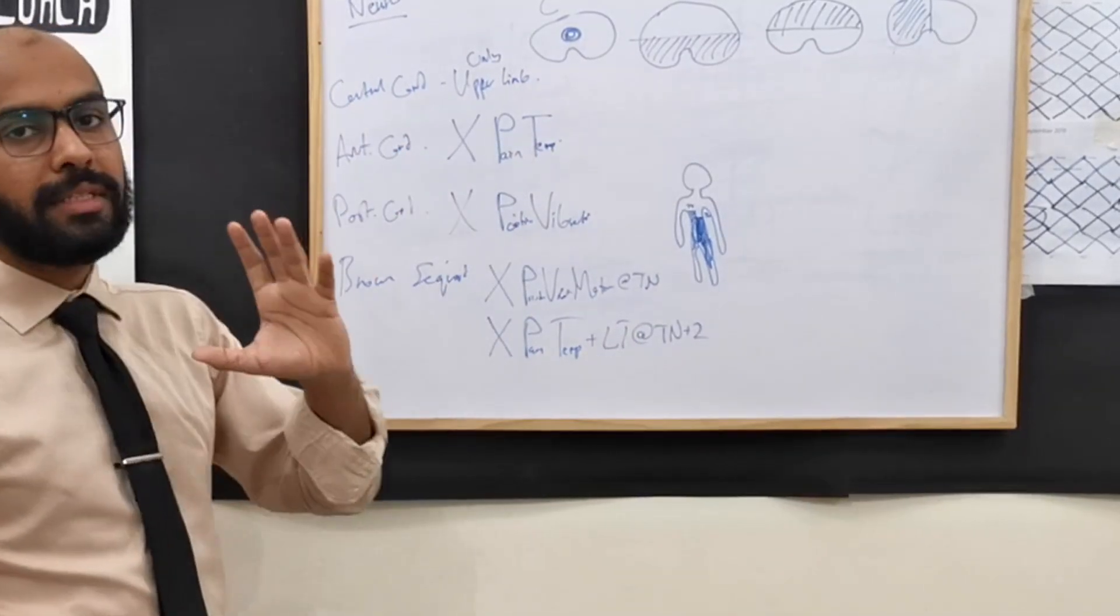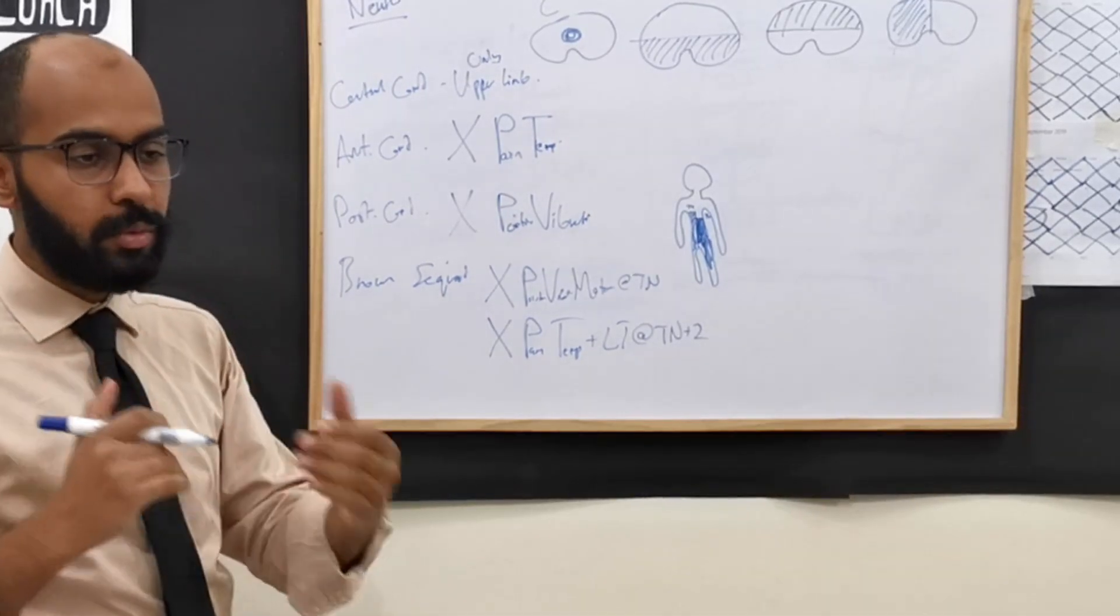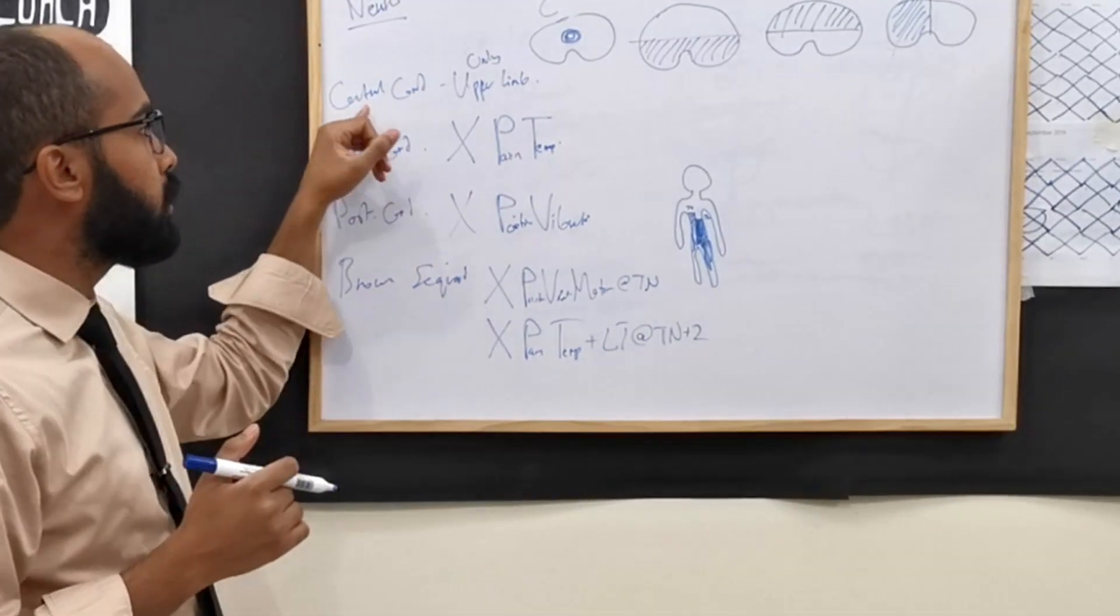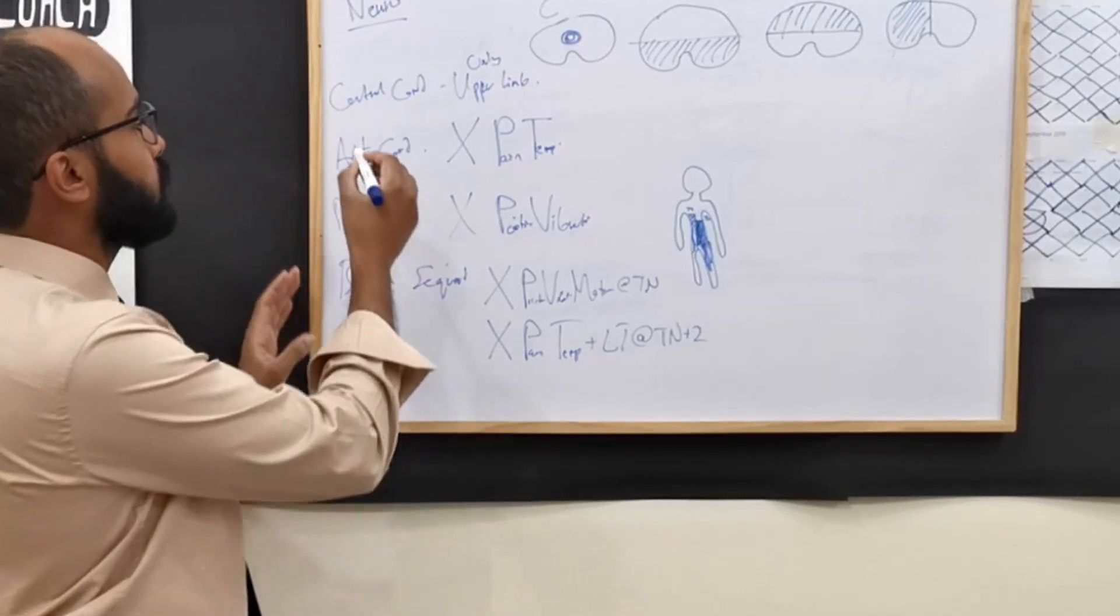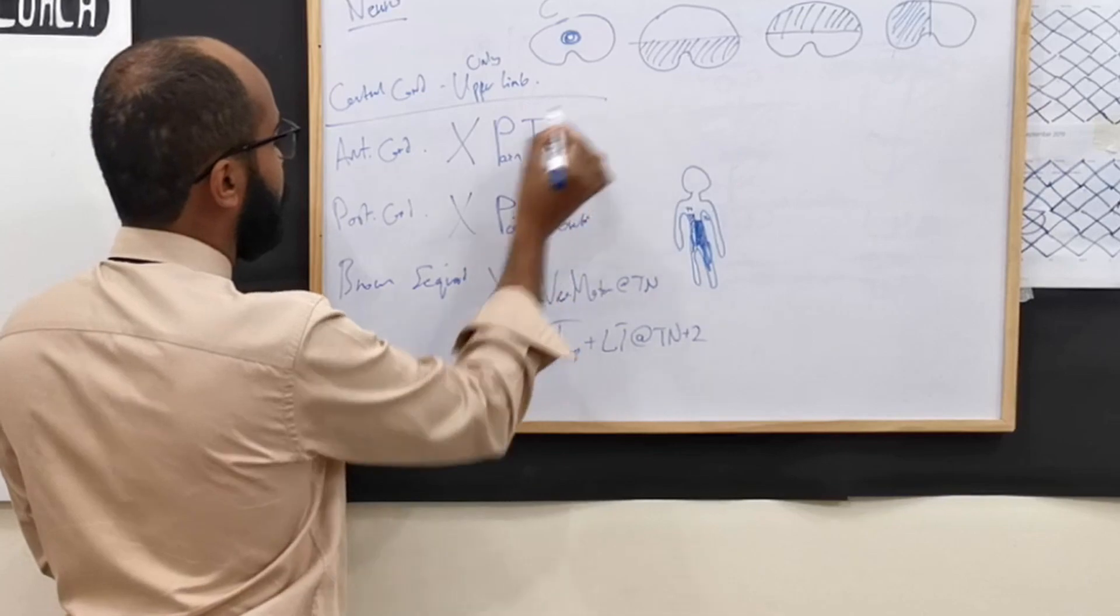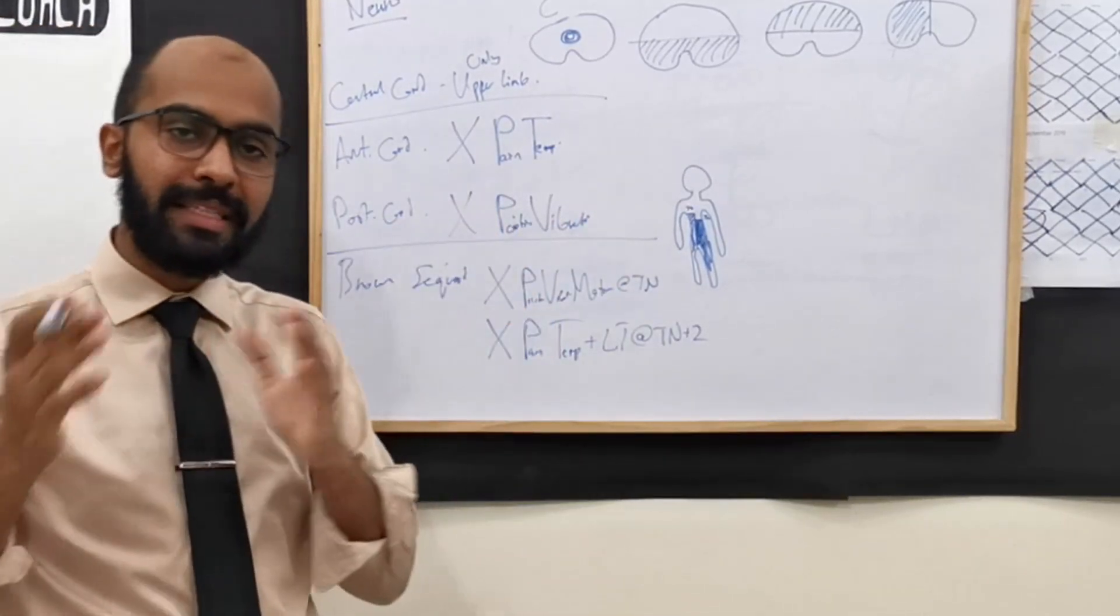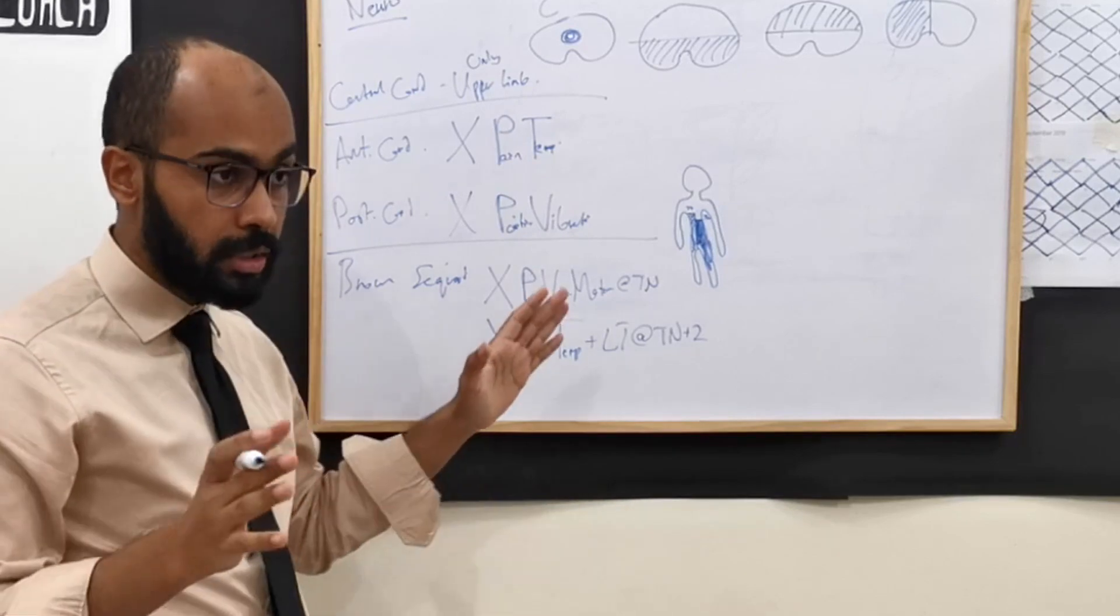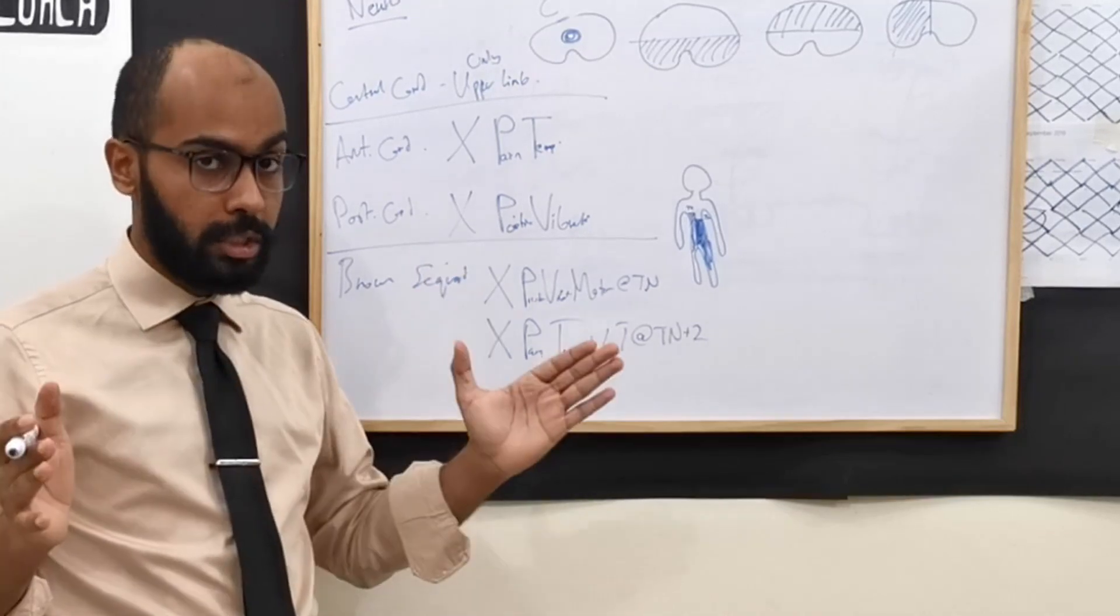Central cord, as soon as there is upper limbs affected without the lower limbs, you think of central cord. Might be confusing to differentiate between those two. But like I said, just remember, anterior is PT, pain and temperature lost. Posterior is PV, position and vibration lost.